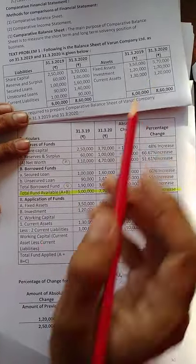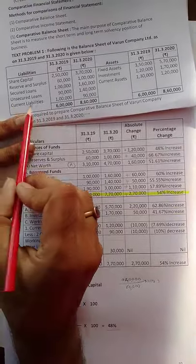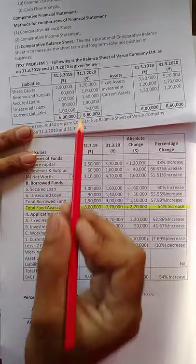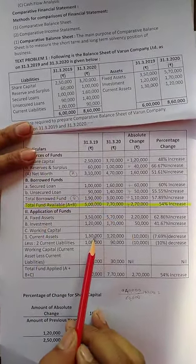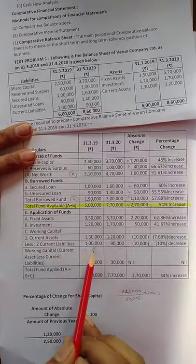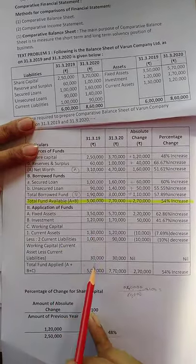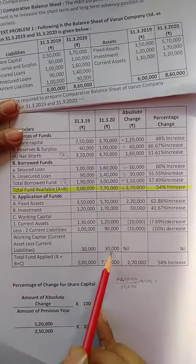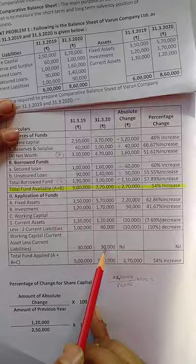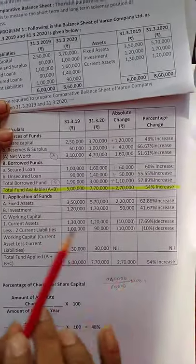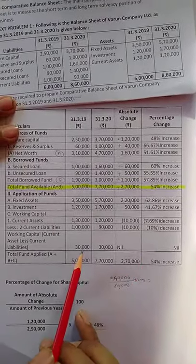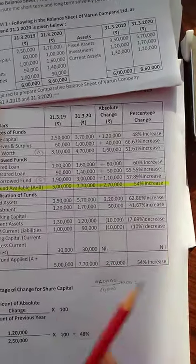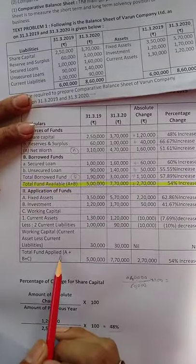Working capital: 2019 figure and 2020 figure are the same — 1,30,000 — so nil, no increase and no decrease. The same figure appears for both years, so the absolute change is zero.